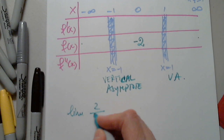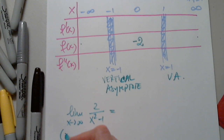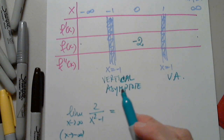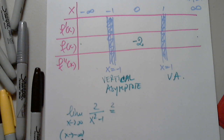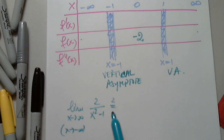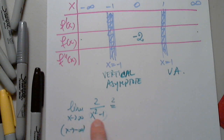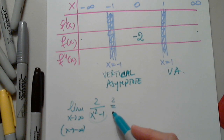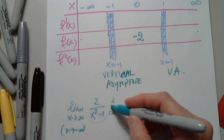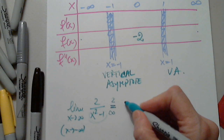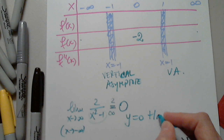The limit of 2 over x squared minus 1 as x approaches infinity or negative infinity: the numerator is 2, and the denominator x squared minus 1 goes to infinity. So 2 divided by infinity equals 0, which means y equals 0 is a horizontal asymptote.